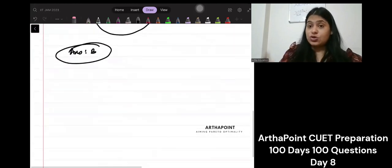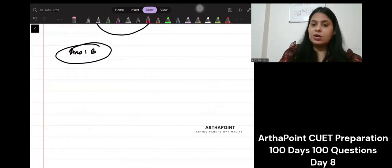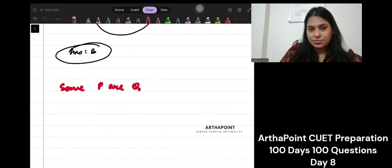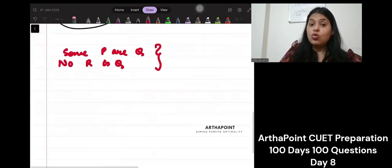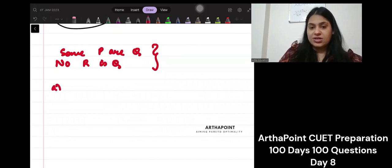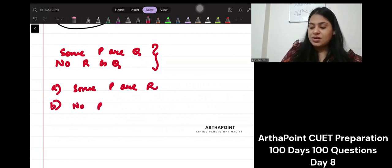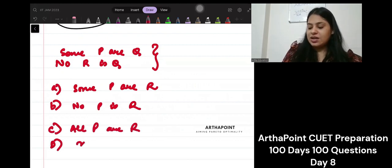Now I give you a question for practice and you have to comment below and tell me the answer to it. Okay. So I am giving you some P are Q and I am saying no R is Q. Some P are Q, no R is Q. What can you infer? First, some P are R. B, no P is R. C, all P are R. D, none.